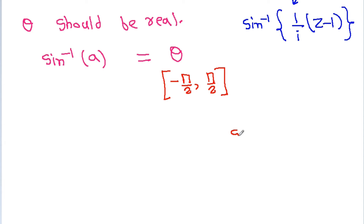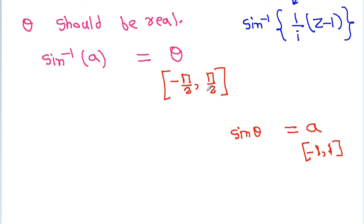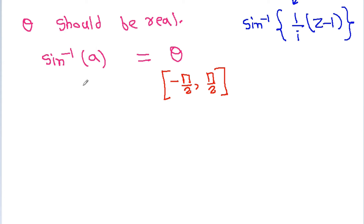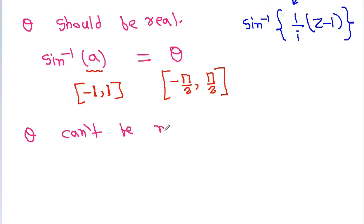For example, if sin(theta) = a, then theta should belong to [-π/2, π/2] if theta is real, because that is the range of the sin function. Similarly, the range of sin inverse is [-π/2, π/2] and its domain — that is, a — should belong to [-1, 1]. Since theta is the angle of a triangle, theta cannot be negative or zero.